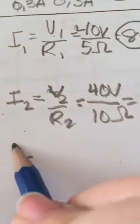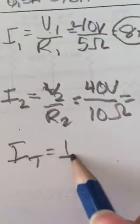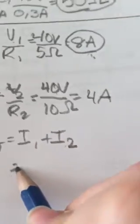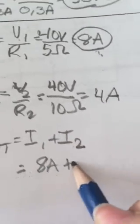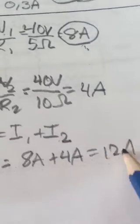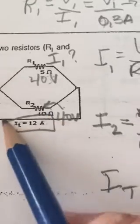Again, the current adds up in parallel, so to find total current: I1 plus I2, which is 8 amps plus 4 amps equals 12 amps. That indeed is the information we had in the problem. And voila!